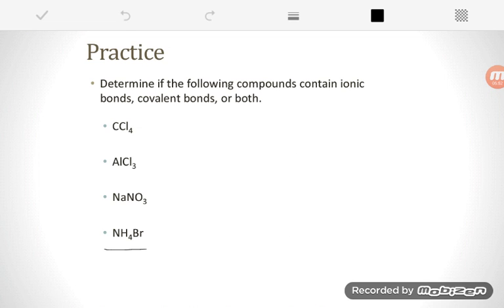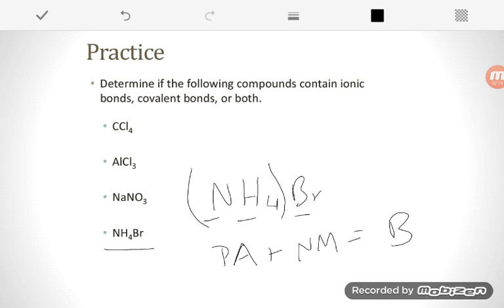Last example, we have ammonium bromide here, NH4Br. Now sometimes people will look at this and say, okay, nitrogen, hydrogen, bromine, these are all nonmetals. But again, we have to recognize NH4, that's a polyatomic. That's my ammonium ion. And any time I have a polyatomic, in this case paired up with a nonmetal, that's going to mean it has both ionic and covalent bonds.